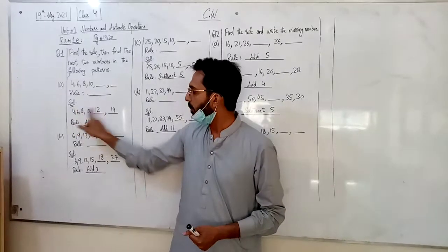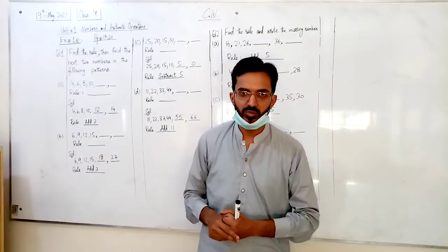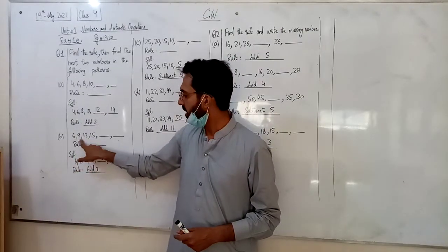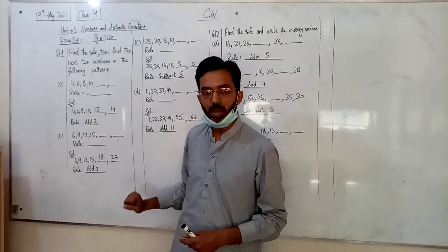Now, the rule is part B: 6, 9, 12, 15. Next two numbers we have to find. Okay, 6 to 9, 9 to 12, 12 to 15.